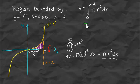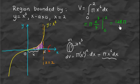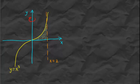We integrate pi x to the sixth dx. The antiderivative of x to the sixth is x to the seventh over 7, so we evaluate pi times x to the seventh over 7 from 0 to 2. Plugging in x equals 2: 2 to the seventh is 128, giving us 128 pi over 7. That's the volume.